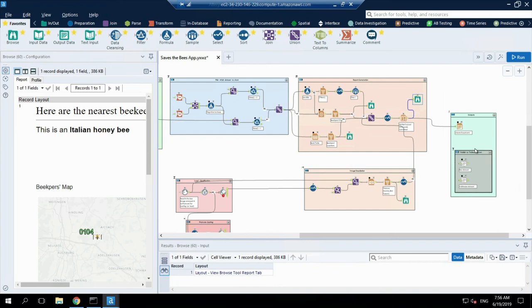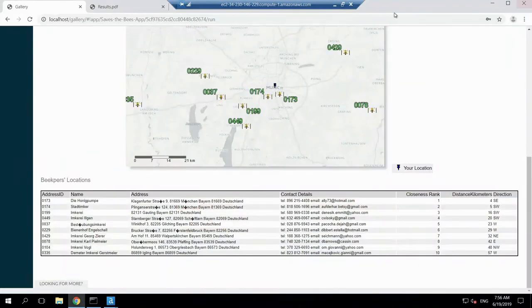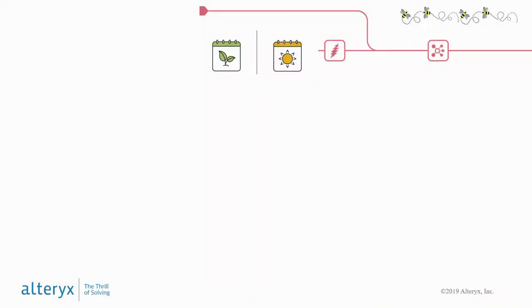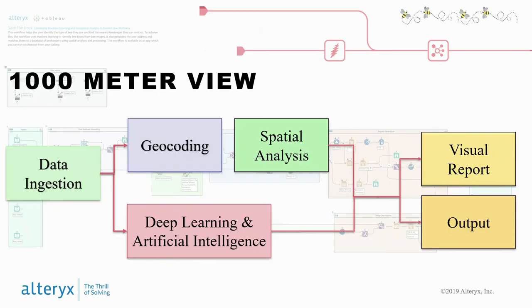Let me just recap what we have done. On the left-hand side you have the data that you ingested. On the right-hand side you have the outputs. In between, you are doing several processing steps: geocoding analysis on the fly, spatial analytics, and in parallel deep learning and artificial intelligence with the help of TensorFlow and Keras. Finally, you are combining all that information into a visual report that you can automate and put into production — thanks to Alteryx Server, which gives end users the capability to make use of the application you just built.